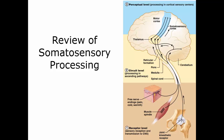To review somatosensory processing: at the receptor level, we pick up the stimulus, and if it's strong enough, a first-order neuron takes it to the central nervous system. A second-order neuron takes it up the spinal cord to the thalamus — some go to the cerebellum. A third-order neuron takes it to the somatosensory cortex, and this is where perception occurs — the perceptual level of processing.